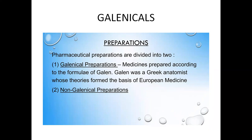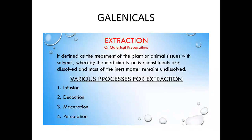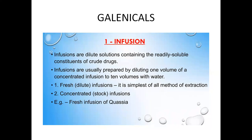Galenical preparations are of two types: galenical preparations and non-galenical preparations. Galenical preparations use the formula of Galen for extracting medicinal constituents, while non-galenical preparations do not. There are four different processes for extracting medicinal constituents from plants: infusion, decoction, maceration, and percolation.